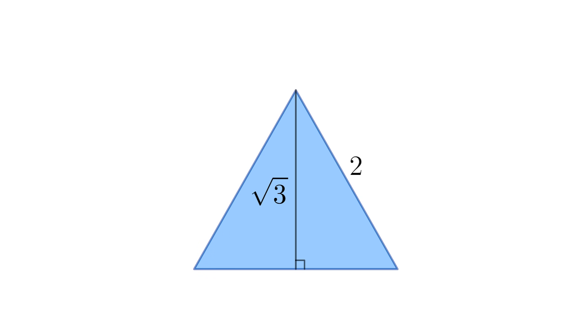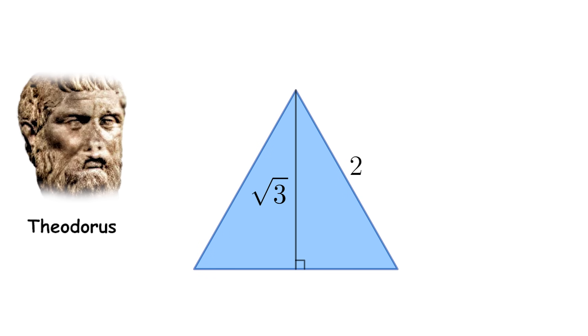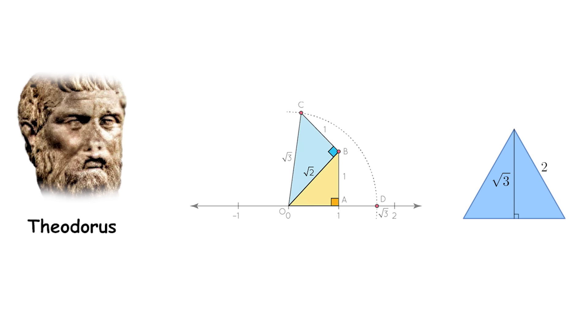Theodorus's constant refers to the square root of 3, which was studied by the ancient Greek mathematician Theodorus of Cyrene. Theodorus proved that the square roots of numbers that are not perfect squares, such as the square root of 3, are irrational numbers. The numerical value of square root of 3 is approximately 1.732, but its decimal representation extends infinitely without repeating.